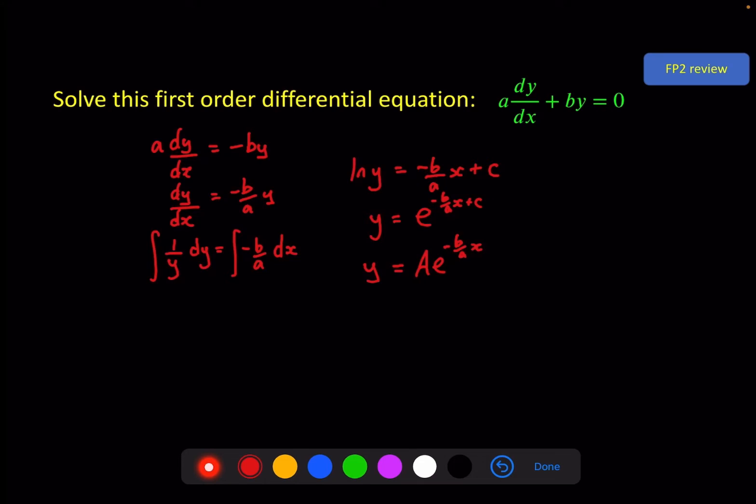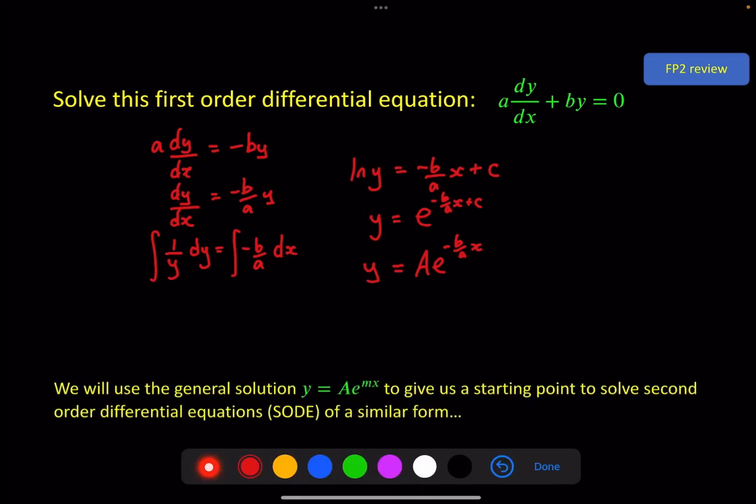Now if we call that minus b over a m, because that's just a constant, then we have the starting point for what we're going to talk about in this video. Because the general solution y = Ae^(mx) gives us a clue as to how we can solve second order differential equations of a similar format.